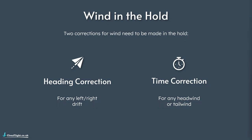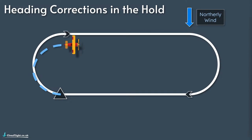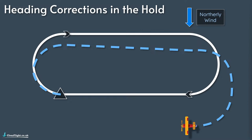The second correction is a time correction - if there's any headwind or tailwind when we're flying the outbound leg, we're going to adjust that one-minute outbound timing slightly. Using the same hold as an example, if there were a northerly wind and we made no changes to our heading, your outbound turn would be squashed a bit because you're turning into a headwind, the turn radius would be slightly smaller. If you didn't correct for the wind on the outbound leg, you would get drifted to the south. And as you flew your inbound turn, you'd have a tailwind, the turn would be much bigger, and you'd end up south of the hold.